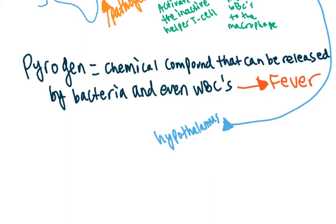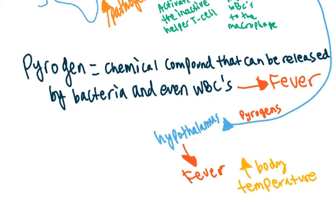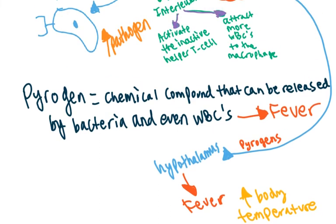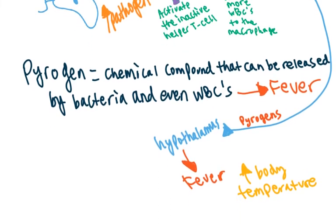Pyrogens like interleukin-1 can go to the hypothalamus of our brain, and our hypothalamus can sense the increased amount of pyrogens and actually set the response of fever, leading to increased body temperature, which can help the immune system fight off whatever pathogen it's trying to fight off. The pathogen will have more trouble trying to survive in a higher body temperature.